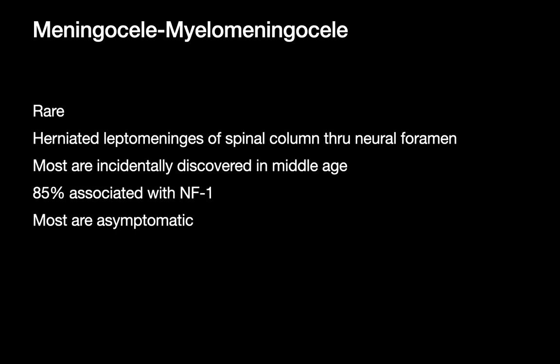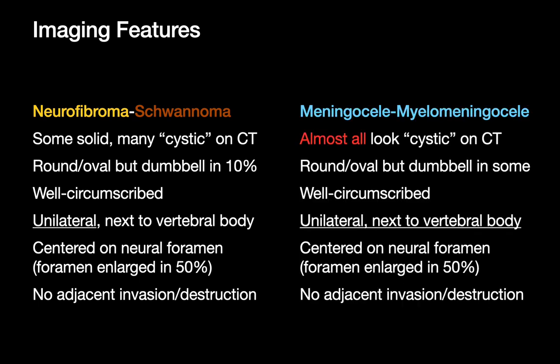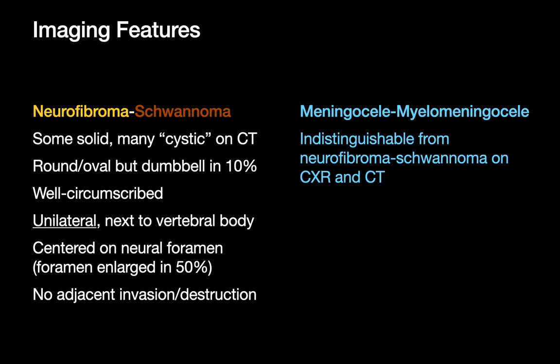Meningoceles and myelomeningoceles are relatively uncommon. They represent herniated leptomeninges, are usually asymptomatic and incidentally discovered. Their imaging features on CT are essentially the same as those described for neurofibromas or schwannomas, making them pretty much indistinguishable from each other on CT. However, you may have a better chance of distinguishing the two on MRI.